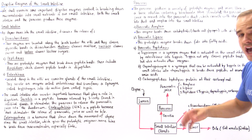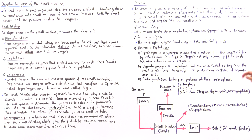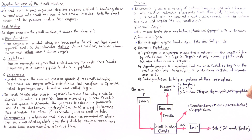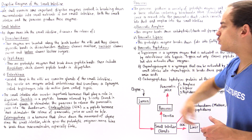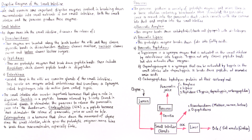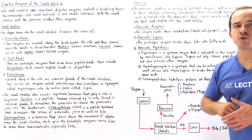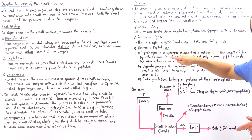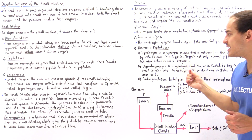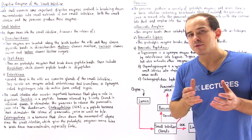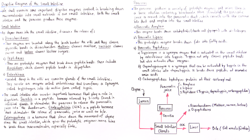Trypsin not only cleaves peptides at specific peptide bonds, but also activates other enzymes. Chymotrypsinogen is another peptidase produced by the pancreas, and it is activated by trypsin — trypsin activates chymotrypsinogen into chymotrypsin. What chymotrypsin does is break down peptide bonds at aromatic amino acids.